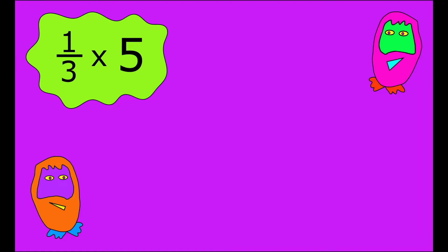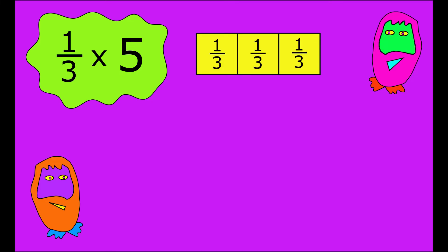Let's start with one-third multiplied by five. And to help me out, I'm going to draw this bar and I'm going to split it into three equal parts. So each of those parts is worth one-third. But I want to multiply by five, so I need to draw another bar and I'm going to split that into thirds.